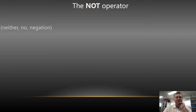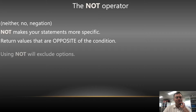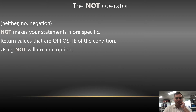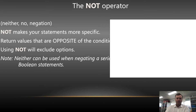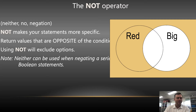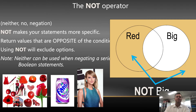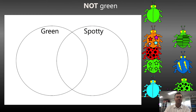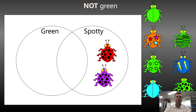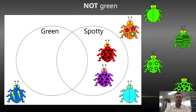The next operator was NOT — so this is negation. NOT makes your statements more specific and returns the opposite of the condition, so NOT will exclude options. So if we said that everything's not big, it would be everything that's outside — like a little invisible fortress of that operator. So everything that's not green would be all the spotty things, so the red and purple spotty things, but also everything that's outside around the edge. So everything that's not green is just the opposite.